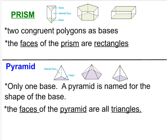This one has two congruent polygon bases — they're pentagons — and all the faces are rectangles, so this would be a pentagonal prism. And this last one shows two congruent polygon bases that are rectangles, and all the faces are also rectangles, so we would call this a rectangular prism.